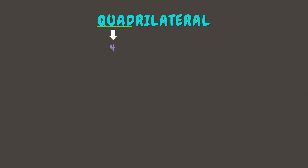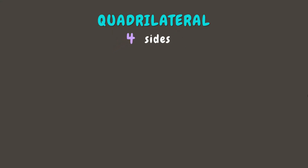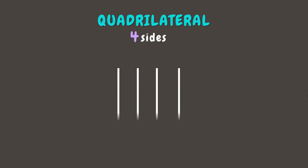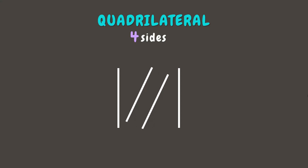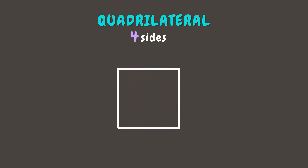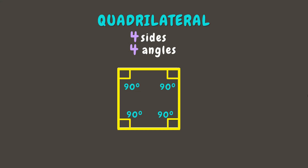The term 'quad' in quadrilateral means four, while 'lateral' means sides. Therefore, a quadrilateral is a polygon with four sides. For example, we have here four line segments. If we combine them to form a figure, we can form a quadrilateral. This figure has four sides, and as we combine these line segments we also create four angles.